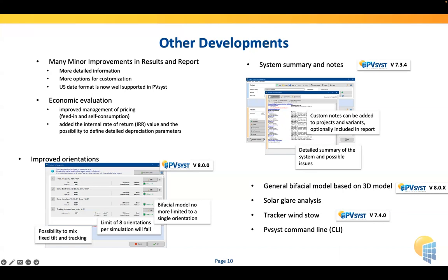We are also working on a general bifacial model based on the 3D drawing. Right now we use a simplified two-dimensional model, but this will be generalized to use the 3D drawing that you have for shadings also for the bifacial calculations — this is not version 8.0 but the following version. Other minor improvements include a solar glare analysis because users are asking for it, a tracker stow position, and we are working on a PVSYST command line which will allow you to operate PVSYST in an automated way from batch scripts without needing the user interface. We have prototypes but no firm timeline for publication.